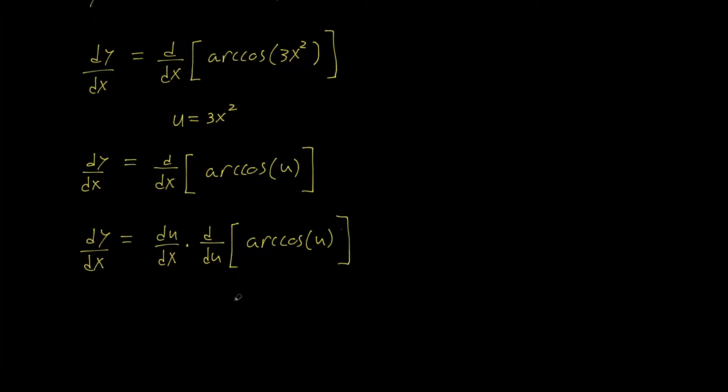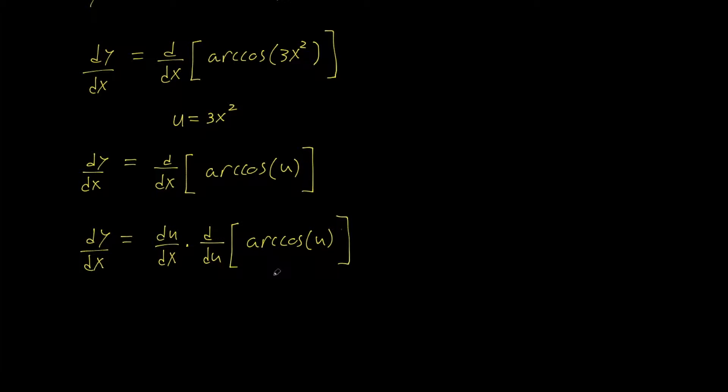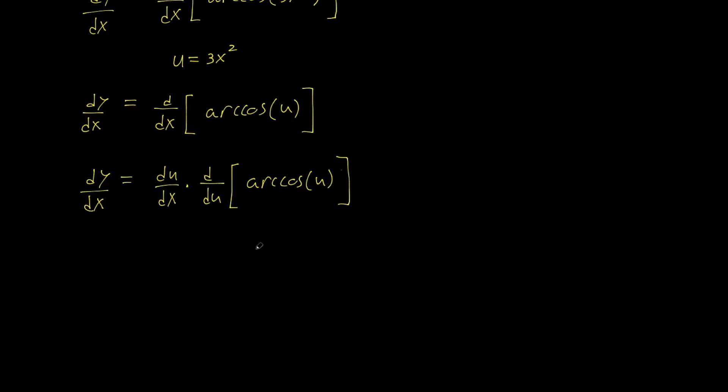Now arc cosine of u is already given. We already did the derivation for the derivative of arc cosine of u. So we're going to get negative 1 over the square root of 1 minus u squared.